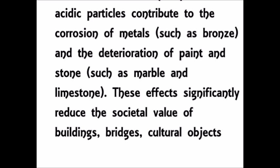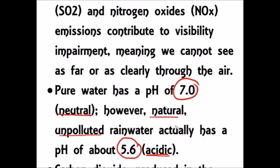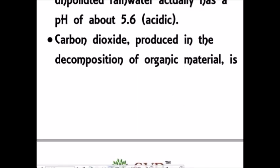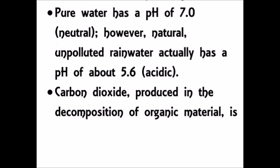One important fact to remember: the pH of pure water is 7 — we call that neutral water. The pH of natural unpolluted rainwater is about 5.6, so natural unpolluted rainwater is acidic in nature. The reason for this acidity is carbon dioxide. Nitrogen oxide also partially contributes to the natural acidity of rainwater.